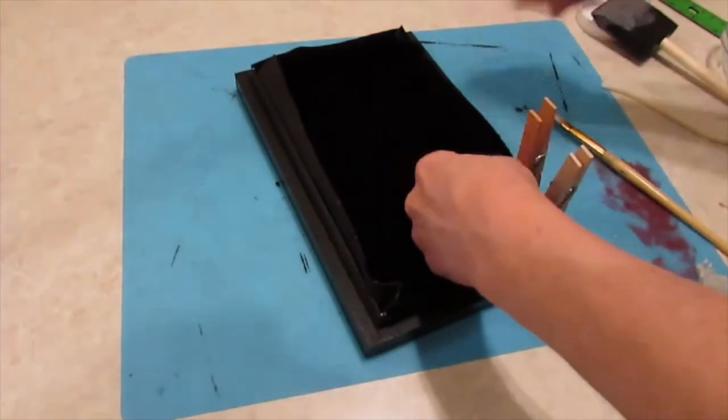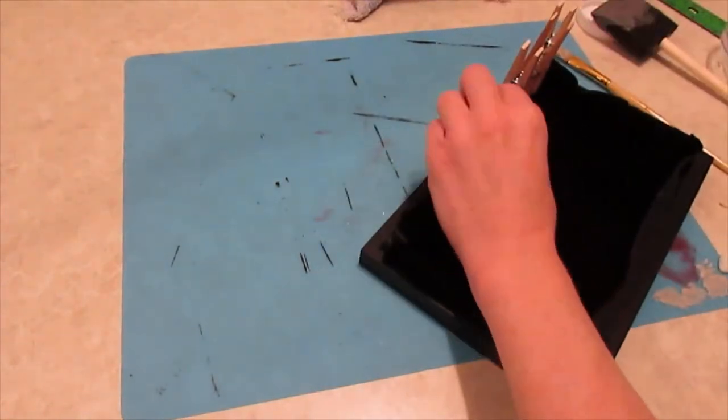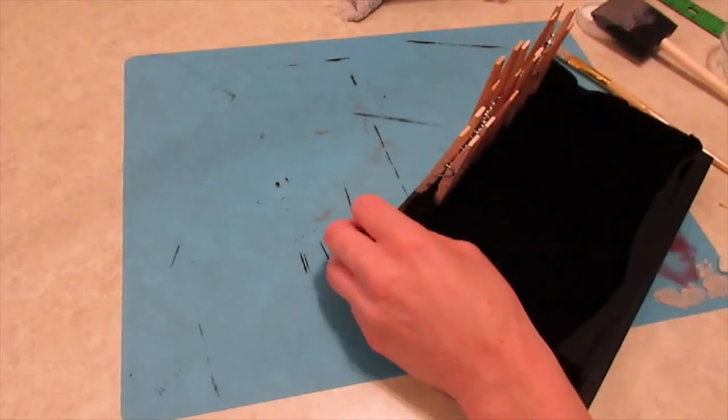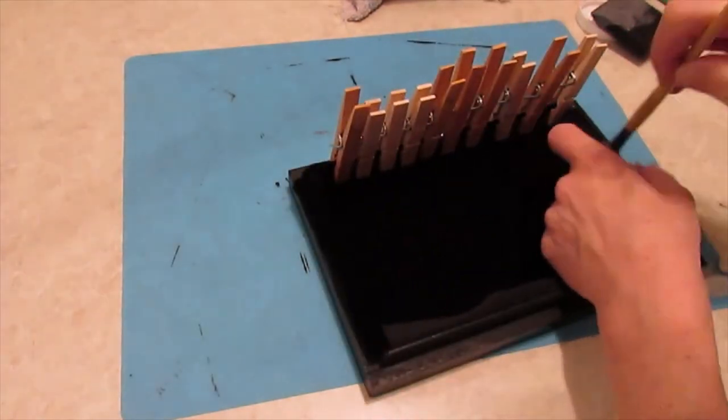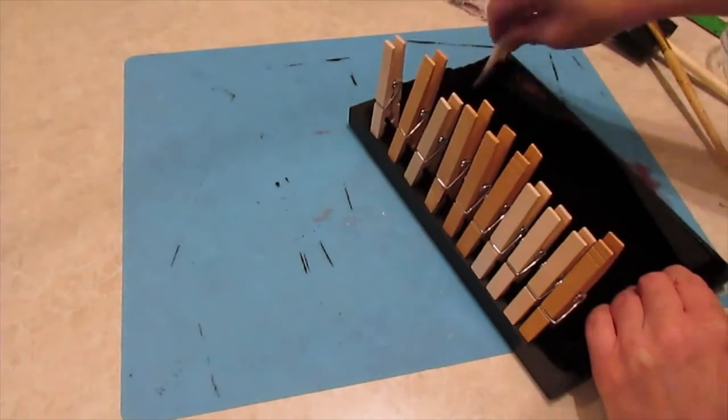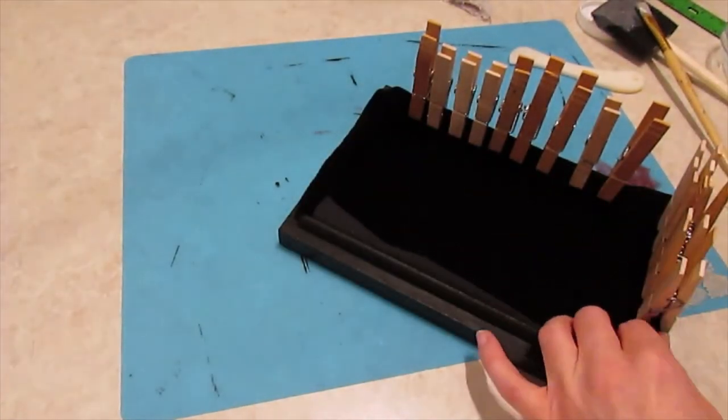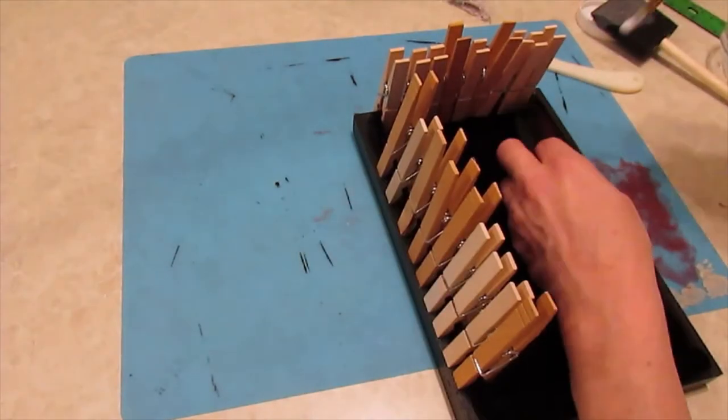I'm just using this bone folder to get really good in the edges there. And then I'm going to use these clothespins just to keep it secure and flush against that inside lip.